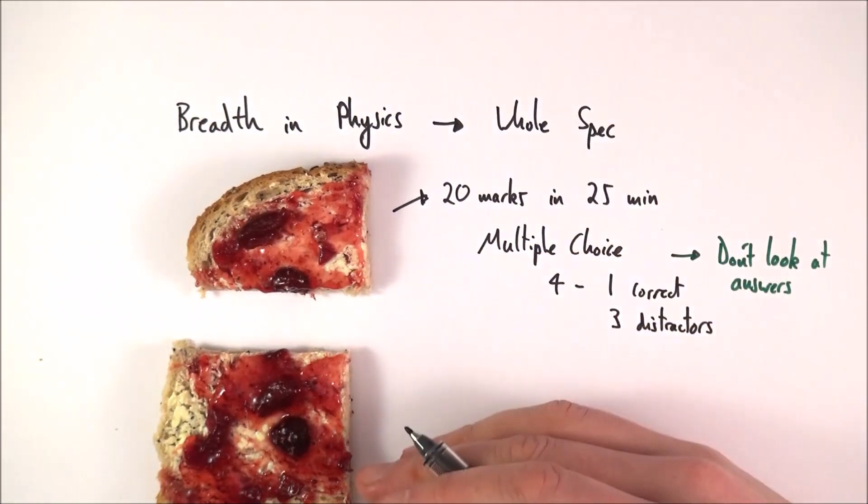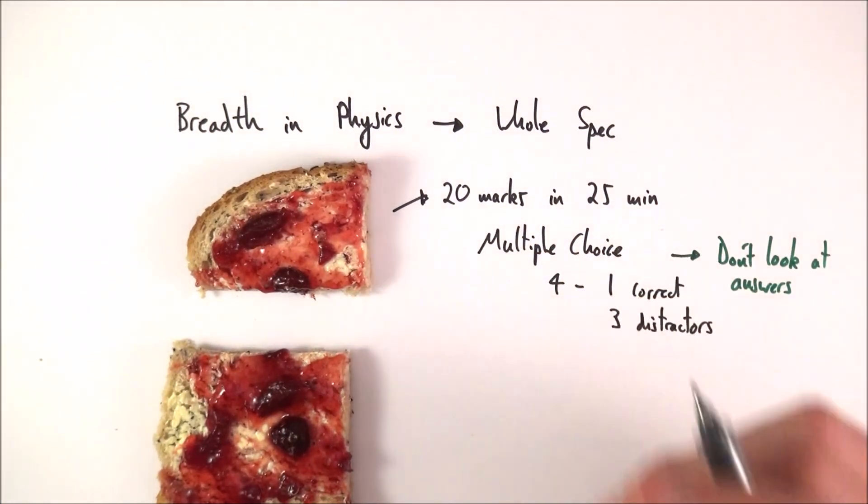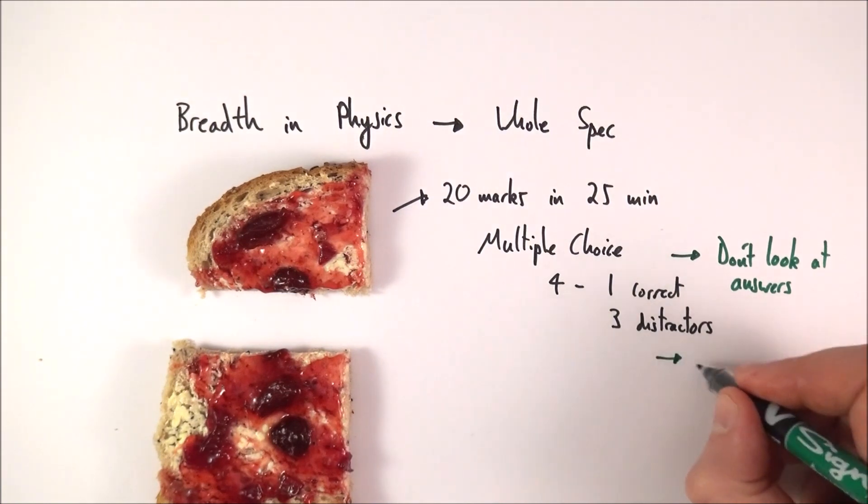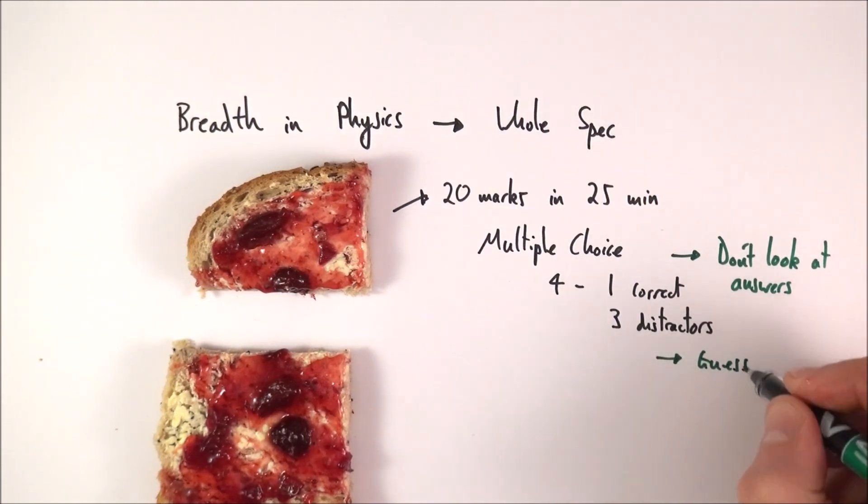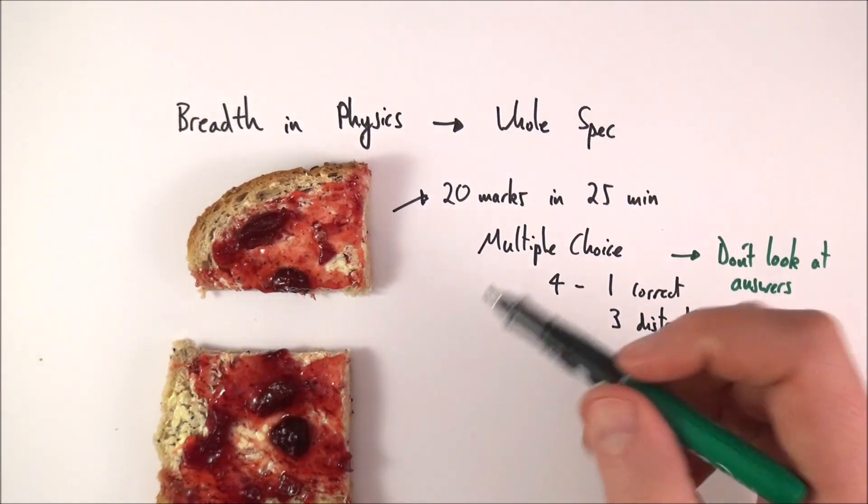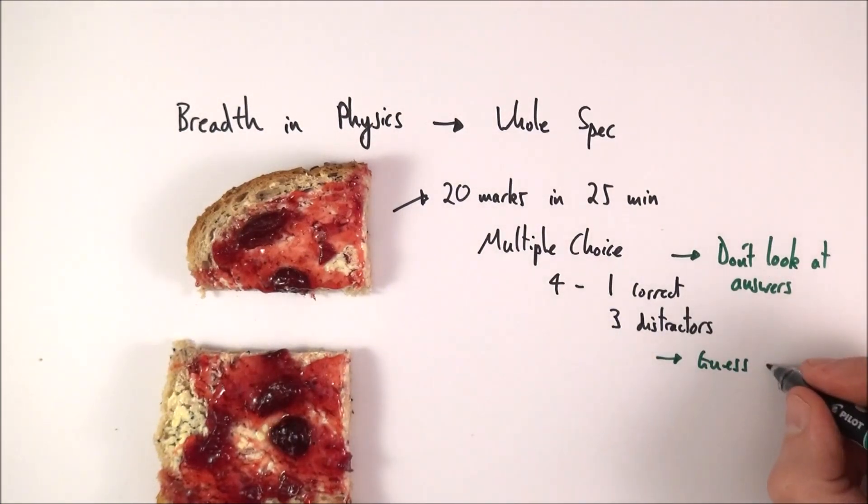Now if you can't get it then move on to the next one, and at the end of the paper what you need to do then is just have a guess. You know, there's nothing to lose. You can choose A, B, C, or D, and basically if you have a guess, if it's like an intuitive guess, then you might be correct. There's no point leaving something blank.